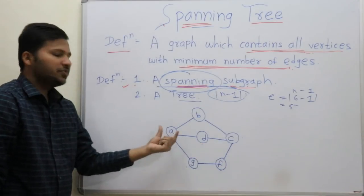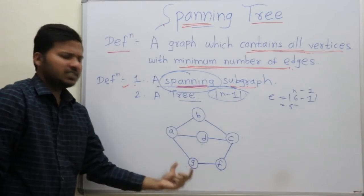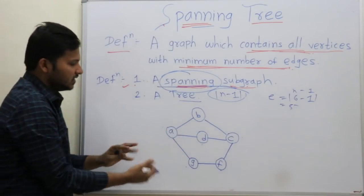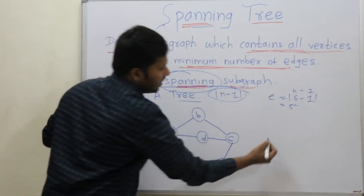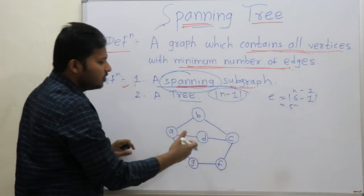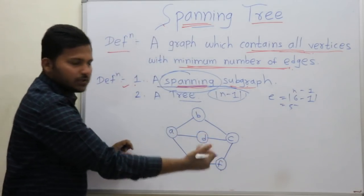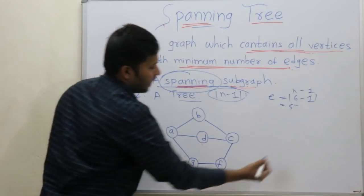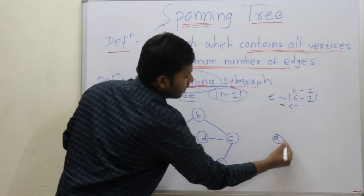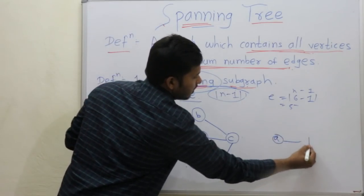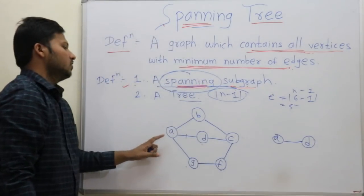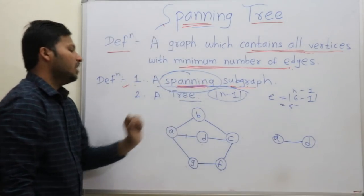Let's start with any first edge — you can take any edge as the first edge. There can be many spanning trees, so we can use any edge for starting. I will use A, D. Now use A, B.